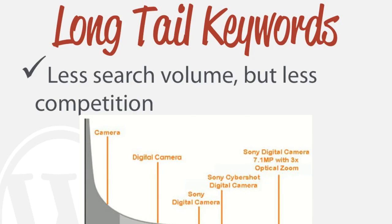This diagram explains it well. A short tail keyword is something like 'camera' — very short, straight to the point. Then 'digital camera' is a little longer, 'Sony digital camera,' 'Sony Cyber-shot digital camera' — you get the picture. As the keyword gets longer, we can see from this graph that 'camera' is a short tail keyword and gets a lot of hits.